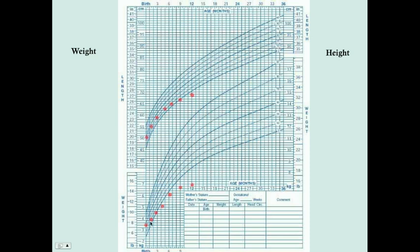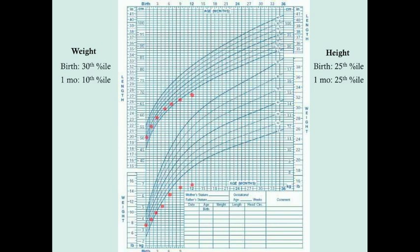We're going to look at each of these periods. The child was born at the 30th percentile, so pretty normal. At one month, however, they were at the 10th percentile. At this point the child is really close already to the definition of failure to thrive. By the second month visit, the child is already at the 5th percentile for weight. Note that the height is still at the 25th percentile. Height, when we're talking about chronic undernutrition, usually manifests later, but weight will manifest very early on.